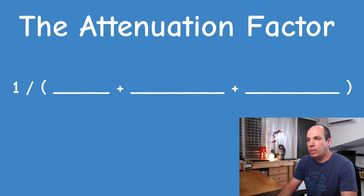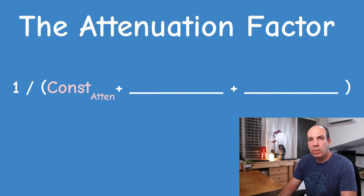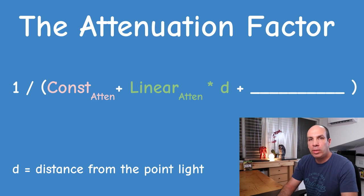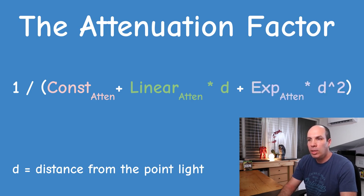The attenuation factor is a fraction with 1 in the numerator. In the denominator we have a sum of several terms. First, we have a constant attenuation term — setting this to 1 guarantees the final attenuation factor will be no more than 1, since all three terms are expected to be positive. Most people set the constant attenuation term to 1. The second term is the linear attenuation, multiplied by the distance. Finally, we have the exponential attenuation term multiplied by the distance raised to the power of 2, which makes the denominator increase exponentially.